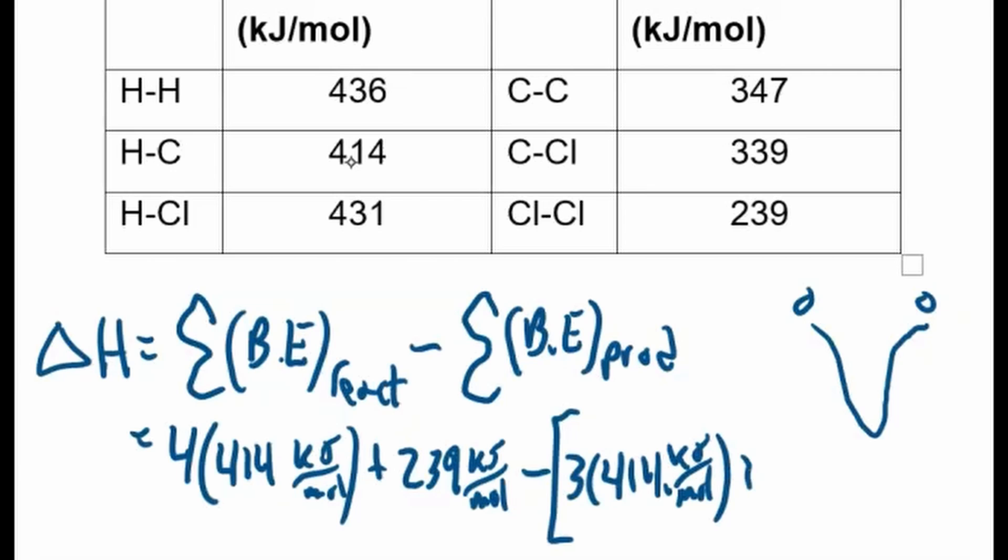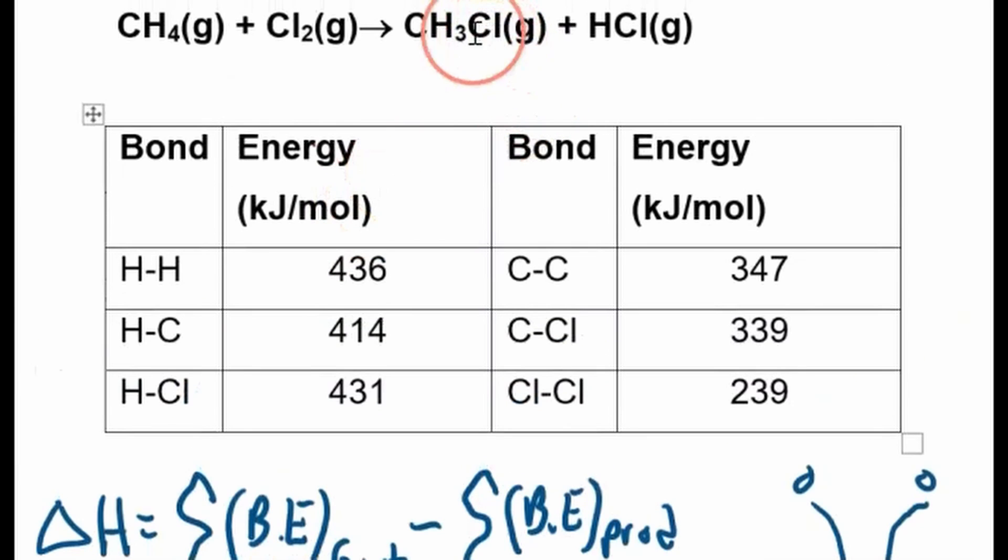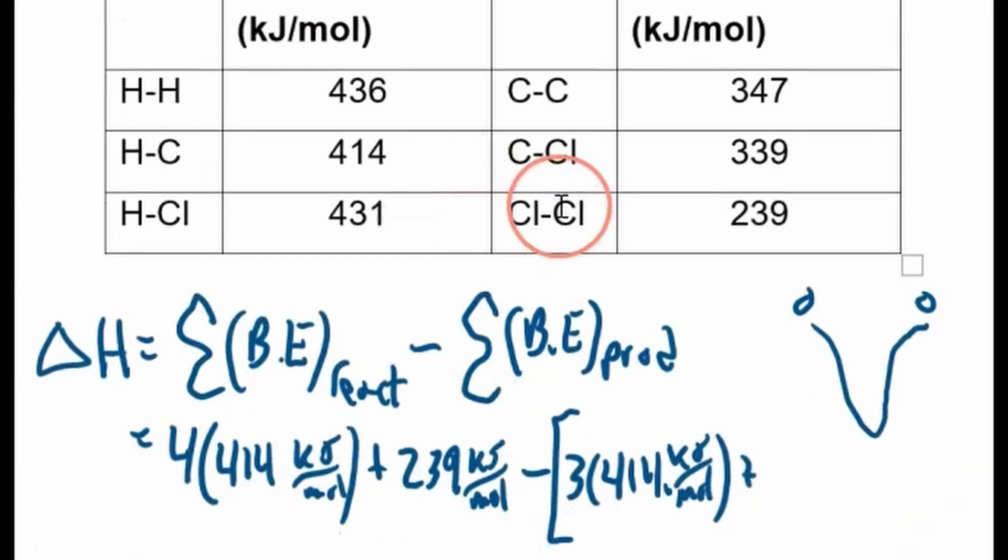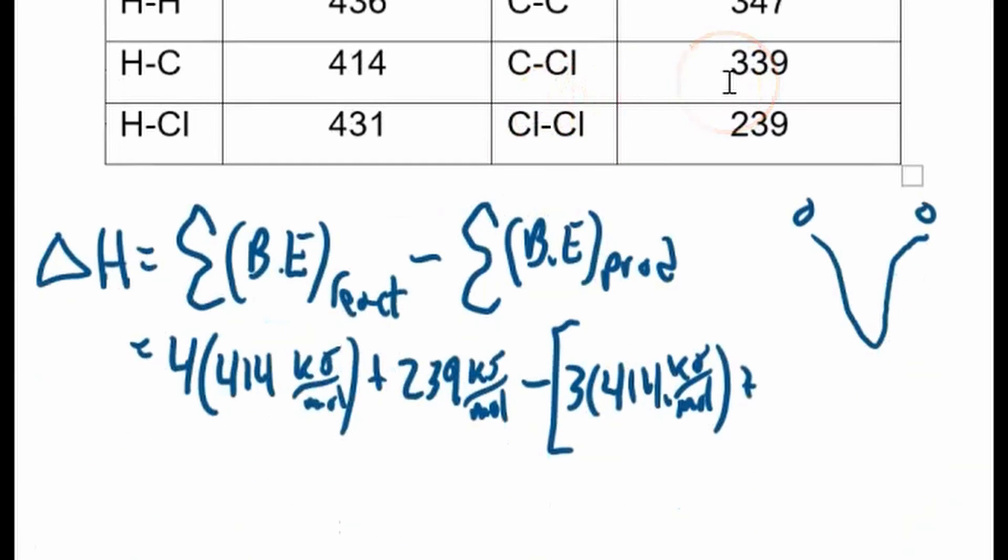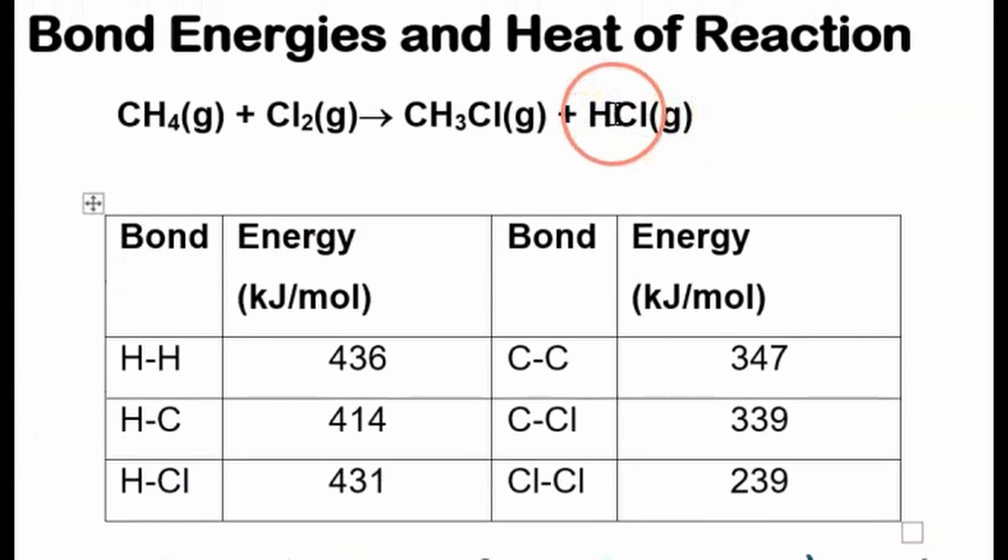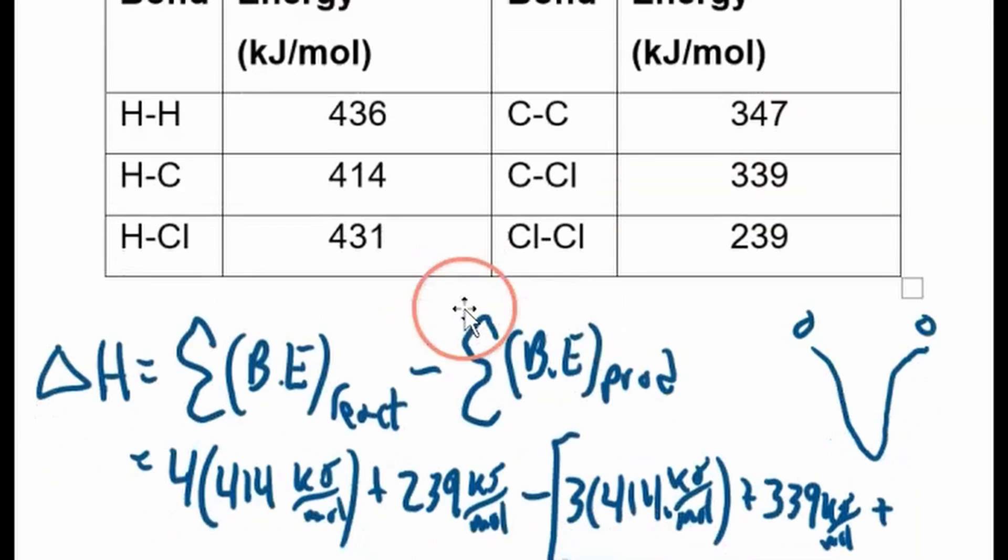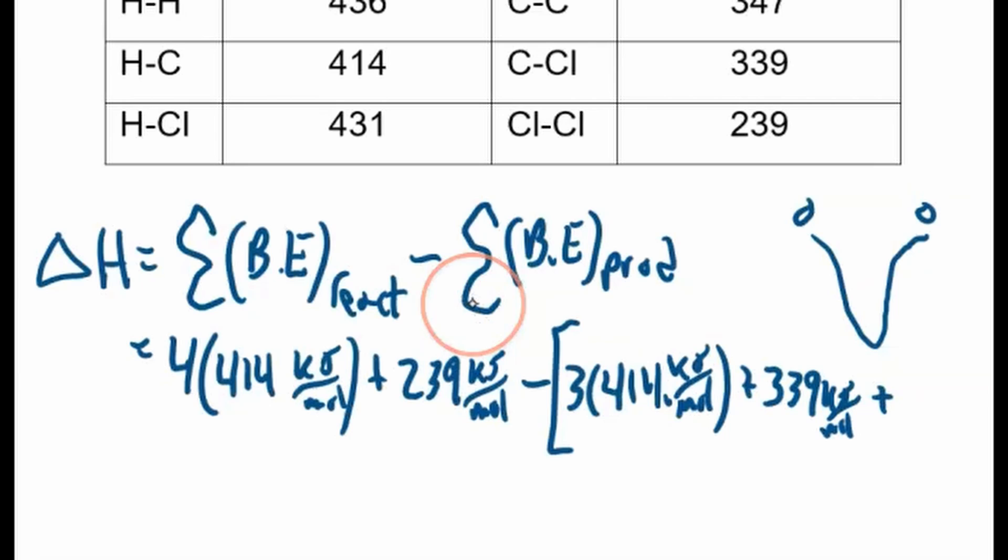And we have a C-Cl bond. Each one has a bond energy of 339 kilojoules per mole. Plus, we want to form an H-Cl bond. H-Cl is here. So 431 kilojoules per mole. Close our brackets.